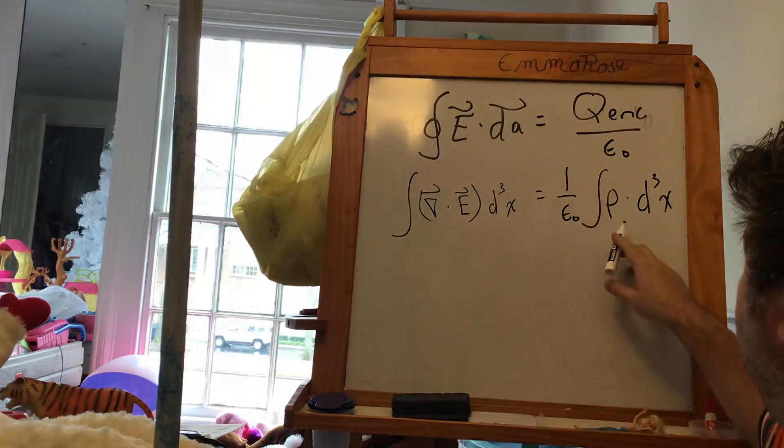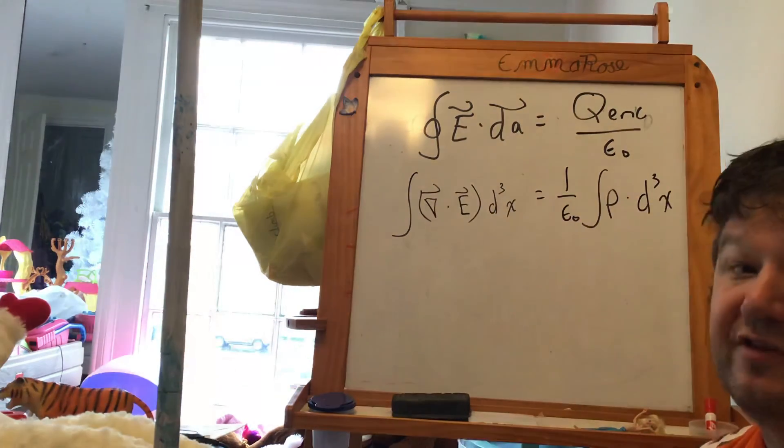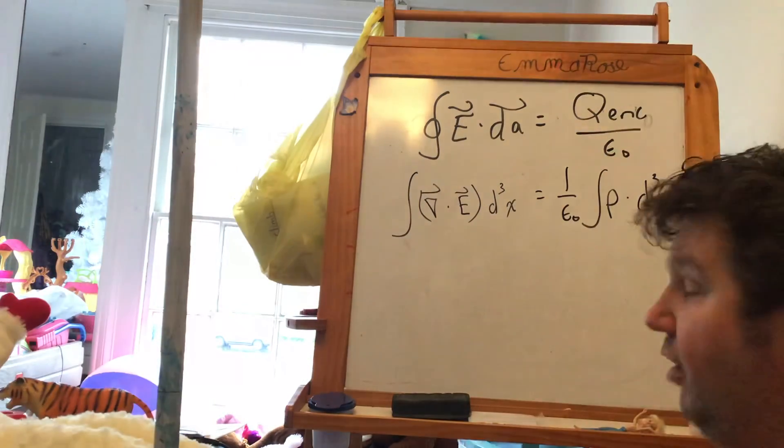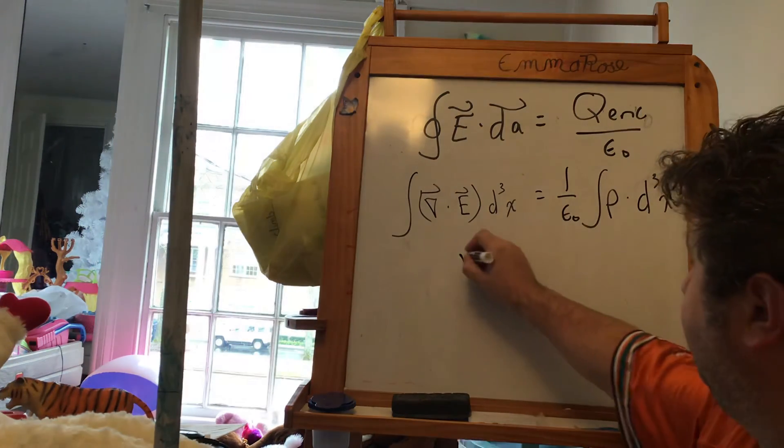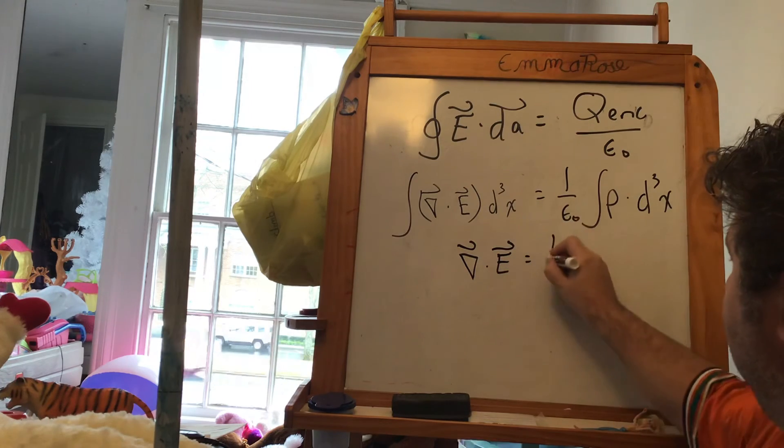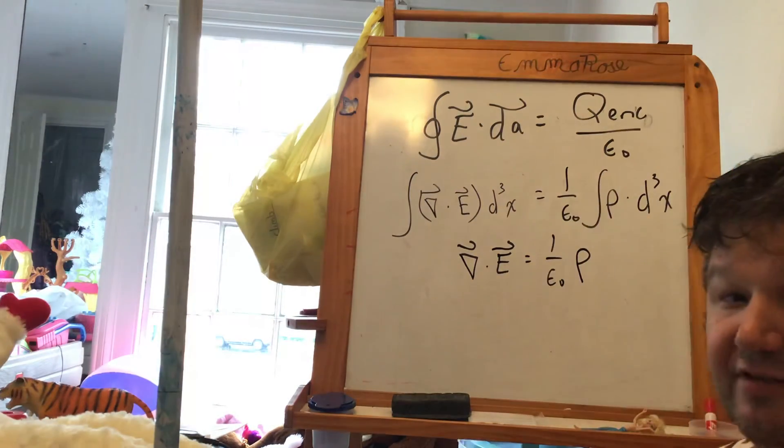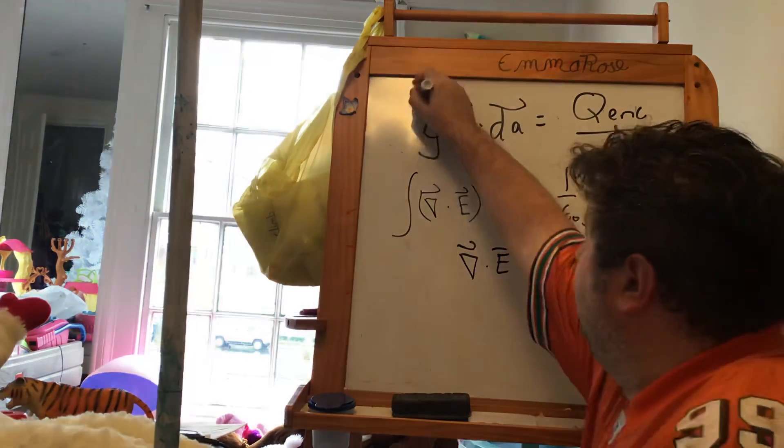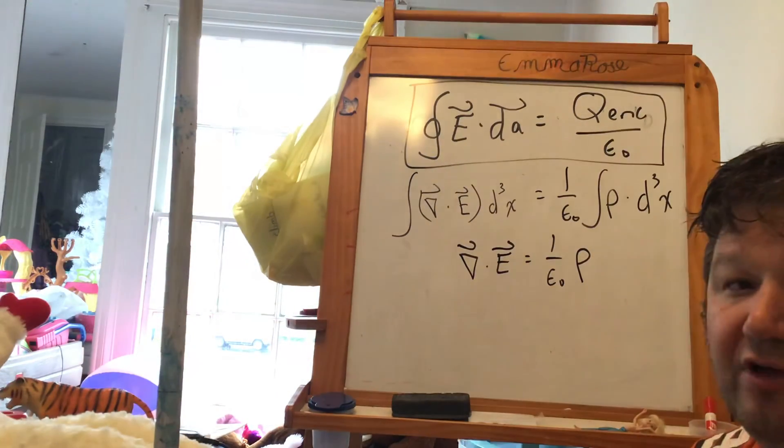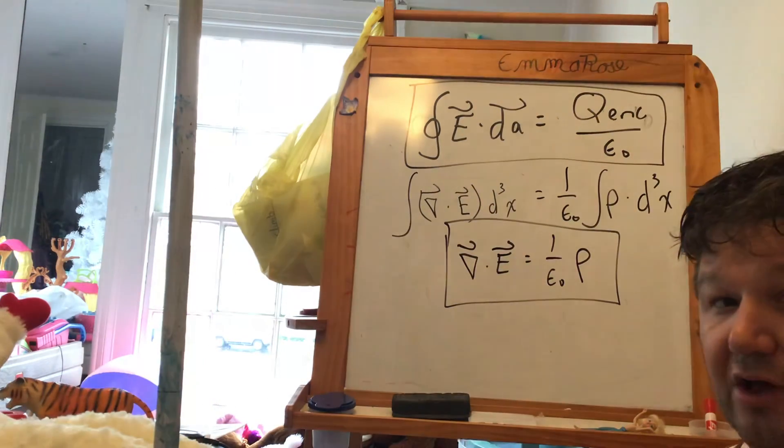So if I look at these two integrals, they're both integrating over the same volume. So what must be true is that the divergence of E has to be 1 over epsilon nought times the charge density. So this is the integral form of Gauss's law, and this is the differential form of Gauss's law. These are the fundamental equations of electrostatics.